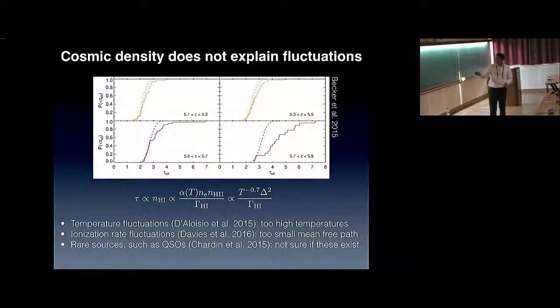One can begin investigating this problem by first noting that the opacity, this tau effective, is related to the temperature, density, and the photoionization rate. The density and photoionization rate dependence is obvious because of ionization equilibrium, but the temperature is slightly less obvious. It turns out that it comes from the recombination rate. So immediately once this problem was noted in 2015, models came out which first noted that density fluctuations don't help in explaining the tau fluctuations. So let's try explaining them by fluctuations in temperature and photoionization rate.